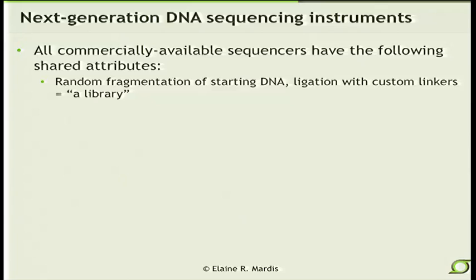Instead of spending a week producing a subclone library which you'd then pick, amplify in E. coli, and isolate DNA in the old-style process, with the new process you essentially, in the period of a day's time, fragment the DNA, add on the adapters by ligation, do some purification and amplification steps, quantitate the library, and you're ready to go. The whole process literally takes less than a day's time and costs on the order of about $100 to $150 to complete, leaving you with hundreds of millions of DNA fragments ready to do next-gen sequencing on.